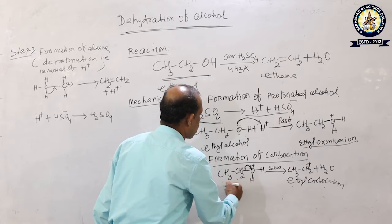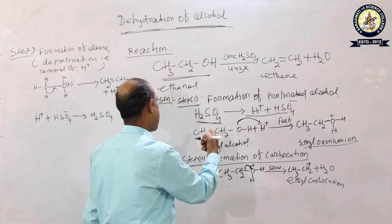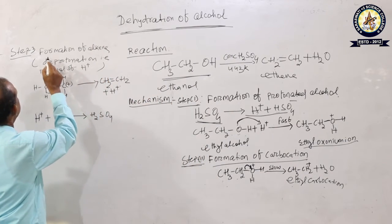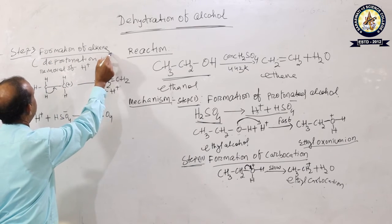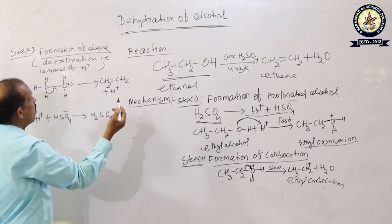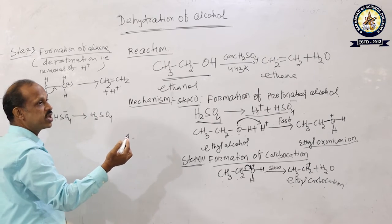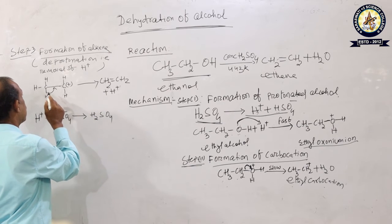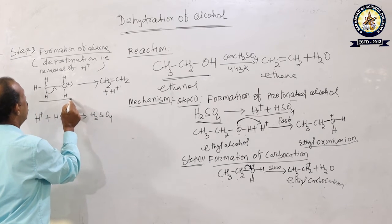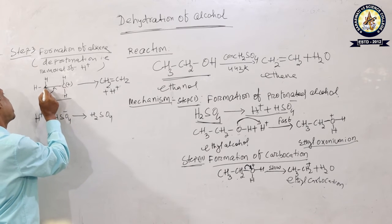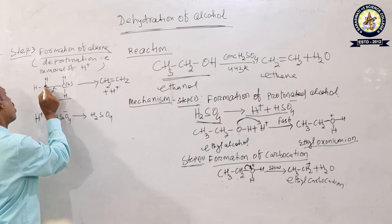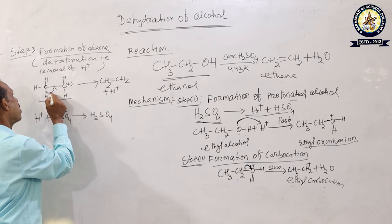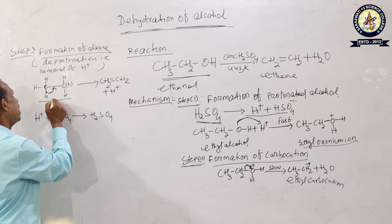In step three, the alkene is formed. The carbocation is a highly reactive and unstable intermediate species. From the ethyl carbocation, one hydrogen atom on the beta carbon leaves — the C–H bond shifts so that H⁺ is released from the beta carbon.